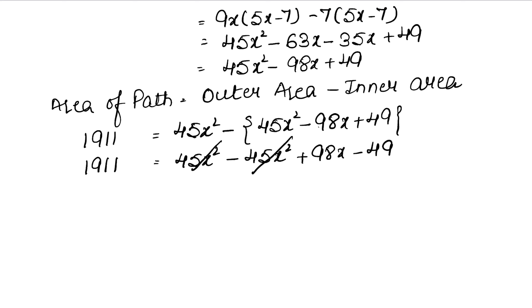Now we have the x terms remaining, and the non-x term goes to the other side and becomes positive. So 1911 + 49 = 98x.